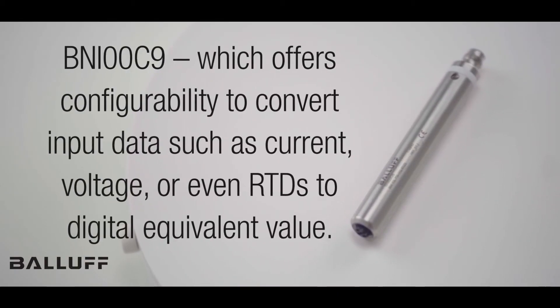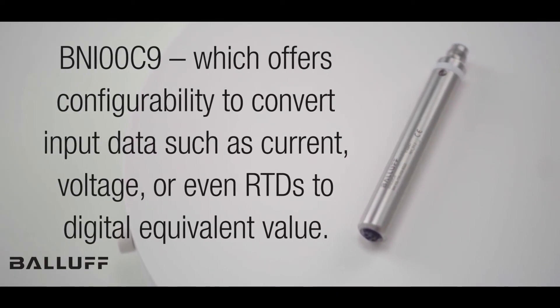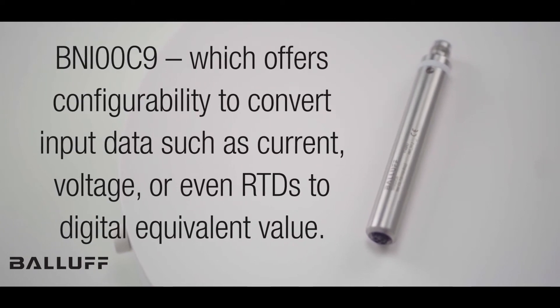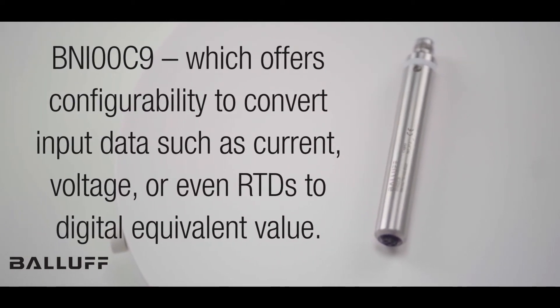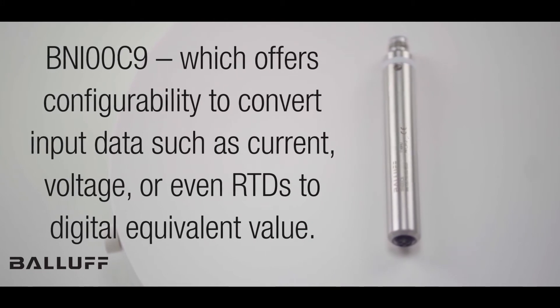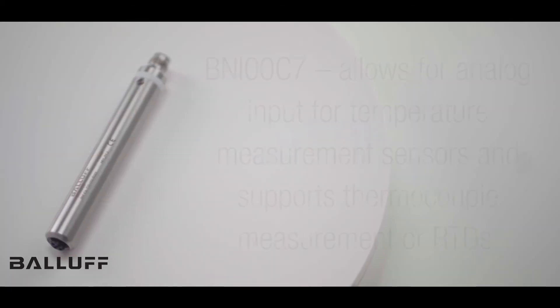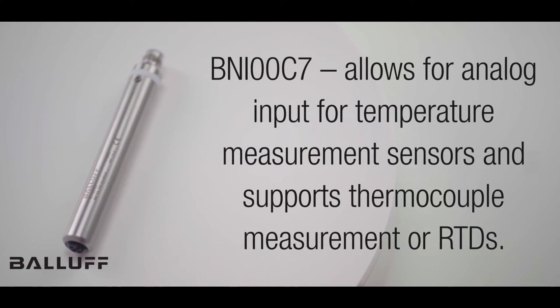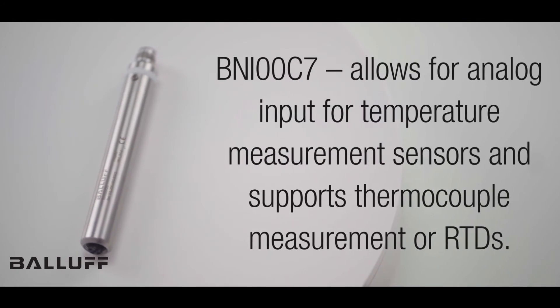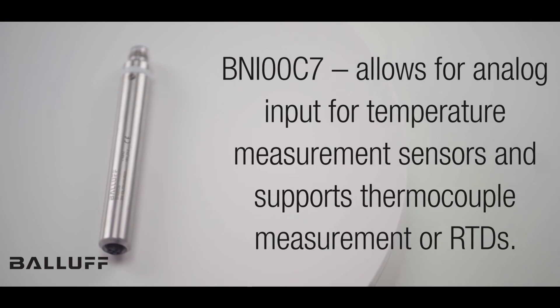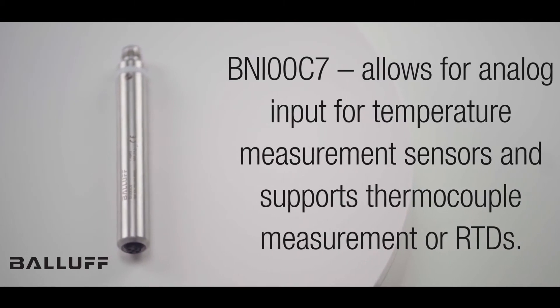The four modules in this family are the BNI00C9, which offers configurability to convert input data such as current, voltage, or even RTDs to digital equivalent value. The BNI00C7 allows for analog input for temperature measurement sensors and supports thermocouple measurement or RTDs.